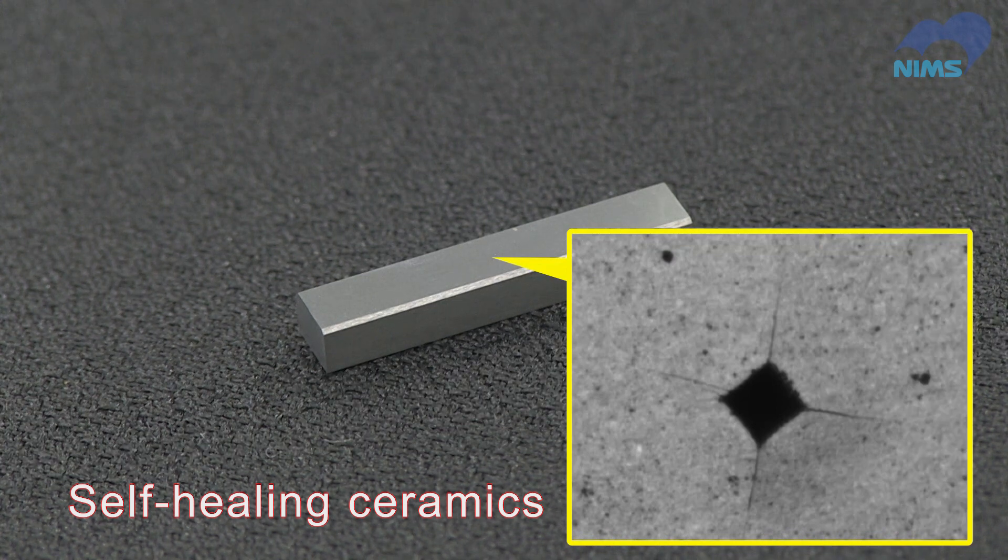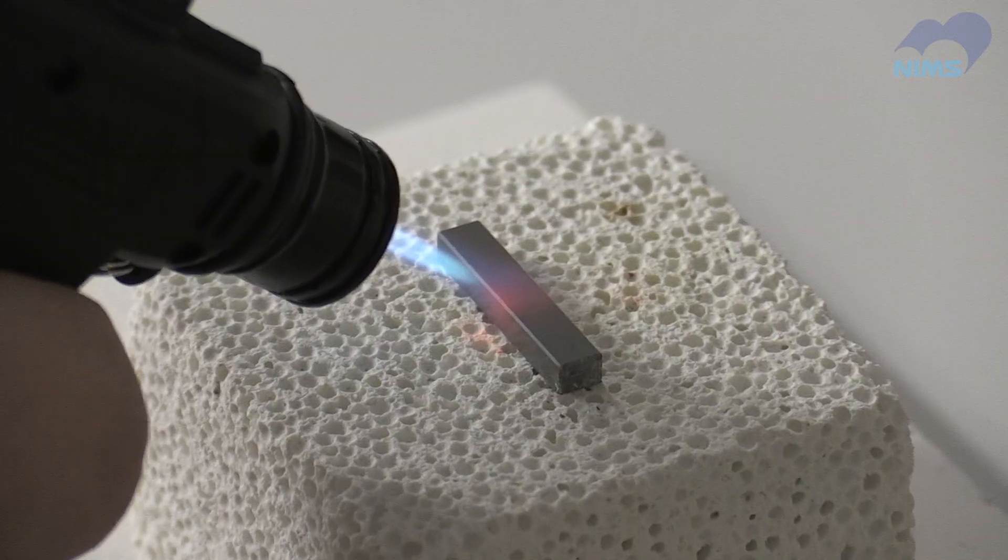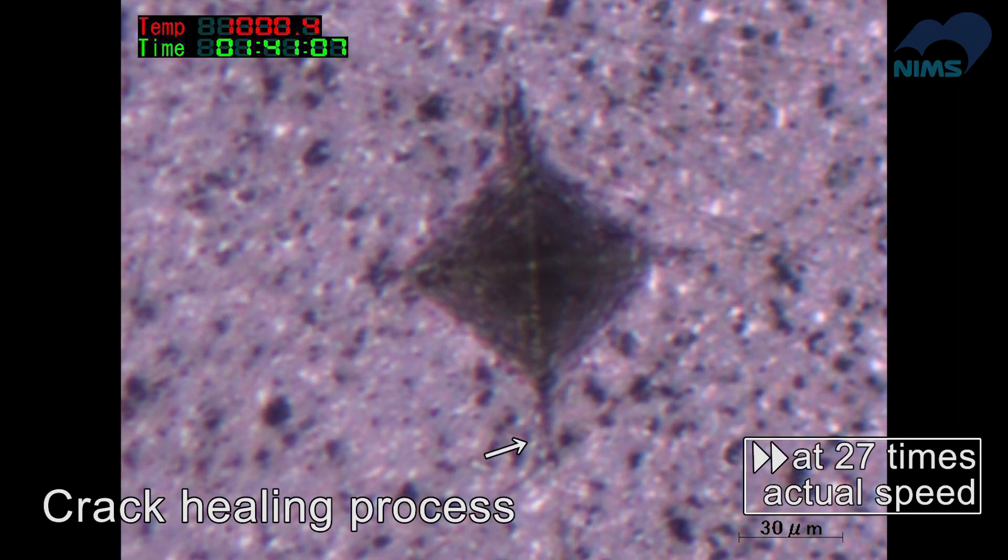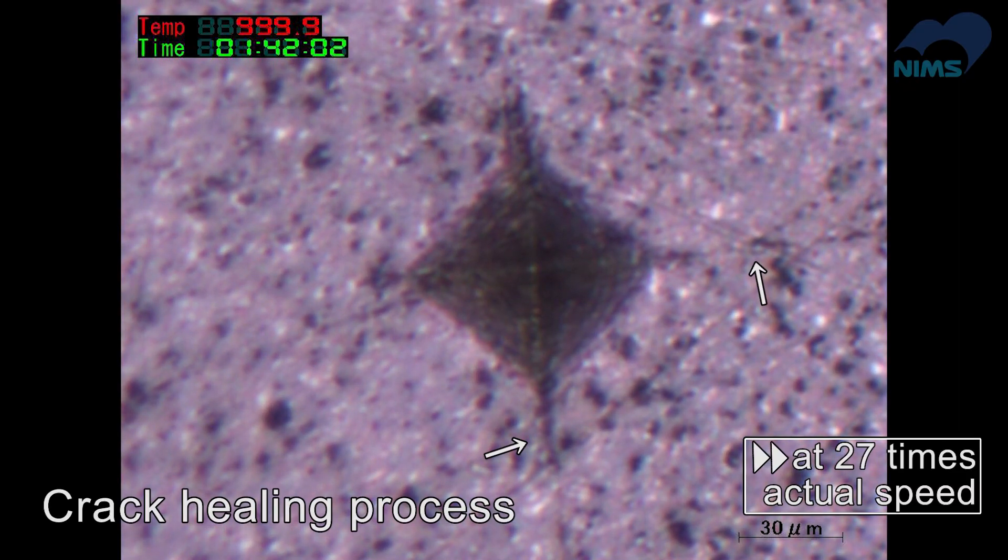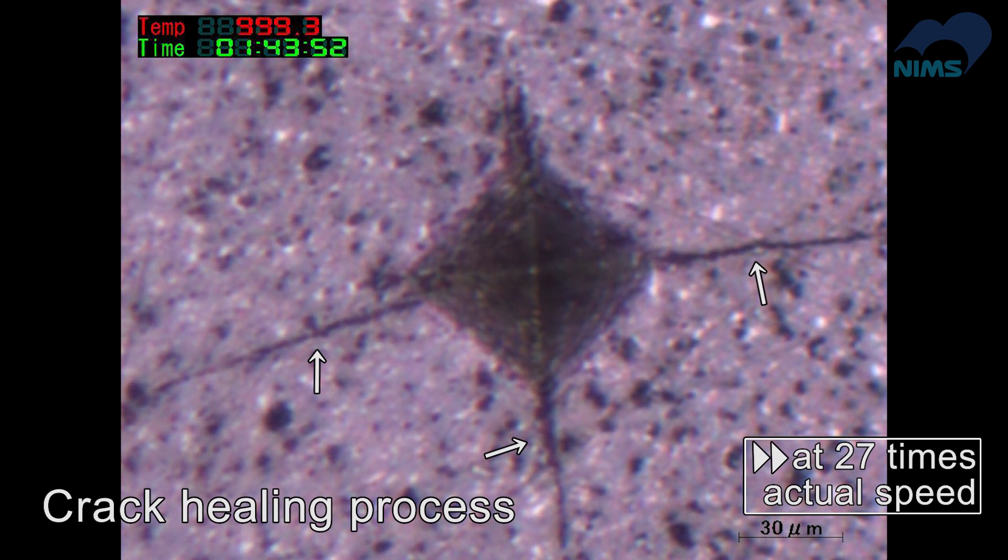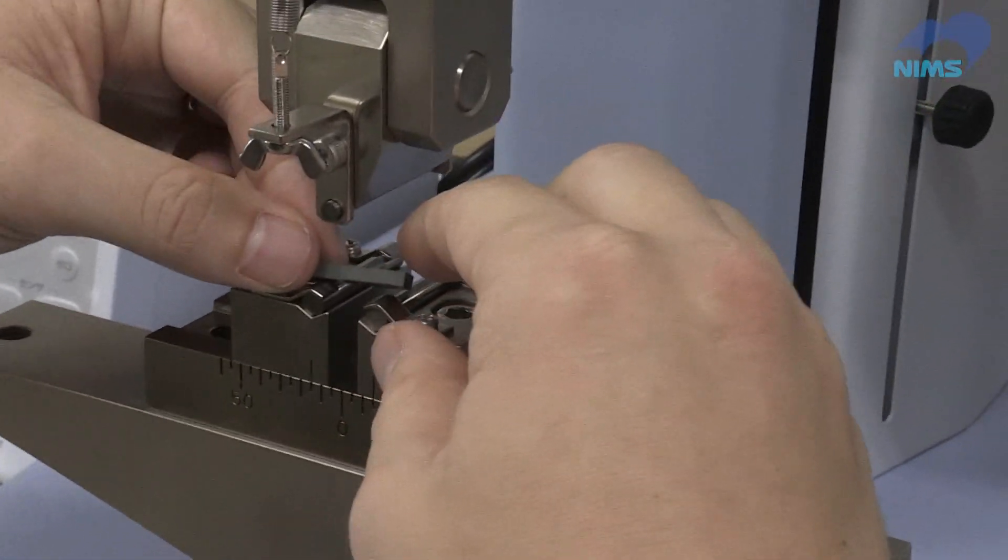Let's watch the initial stage of the healing process in a sample with artificial cracks. After only one minute of heating at 1000 degrees centigrade, we can see some liquid appearing in the cracks. These healed cracks are strong enough to endure this fracture test.